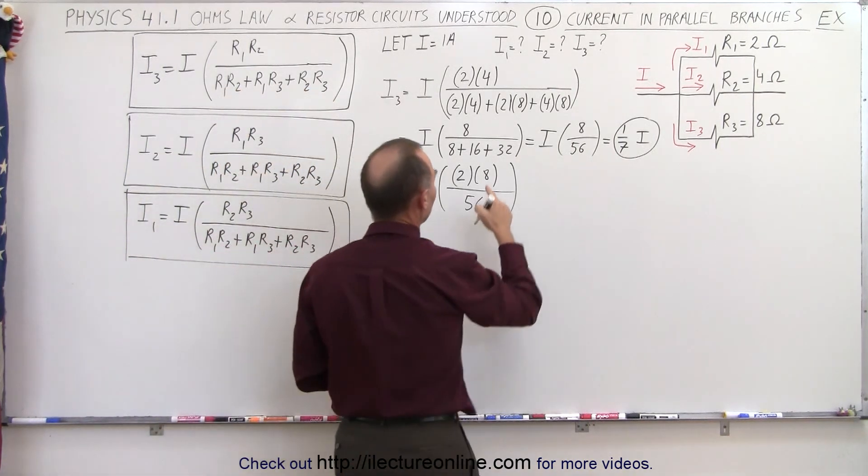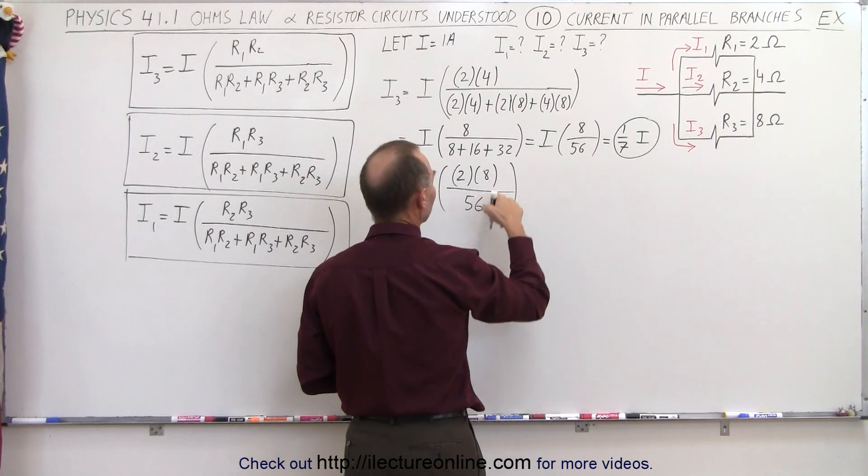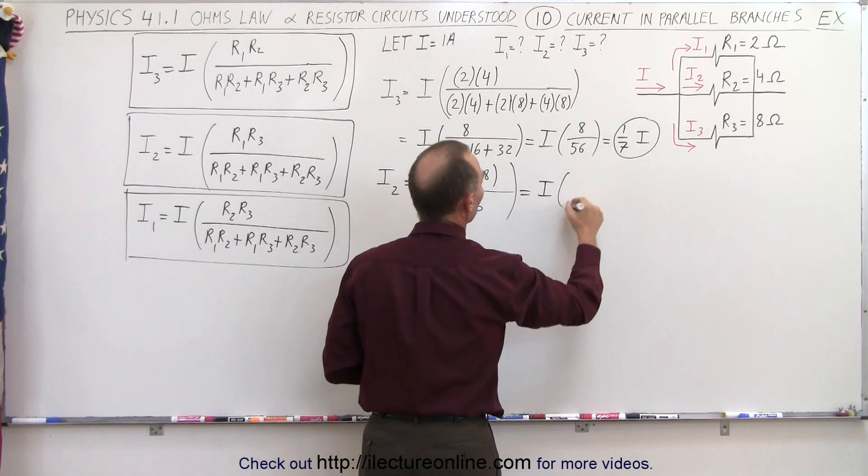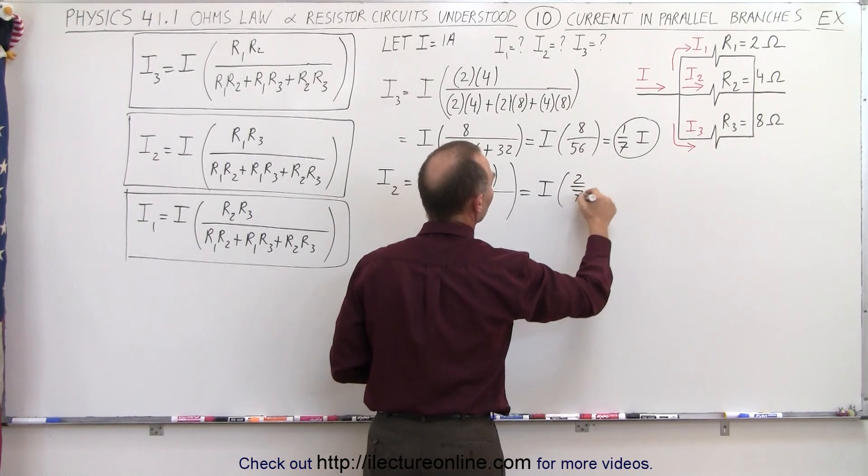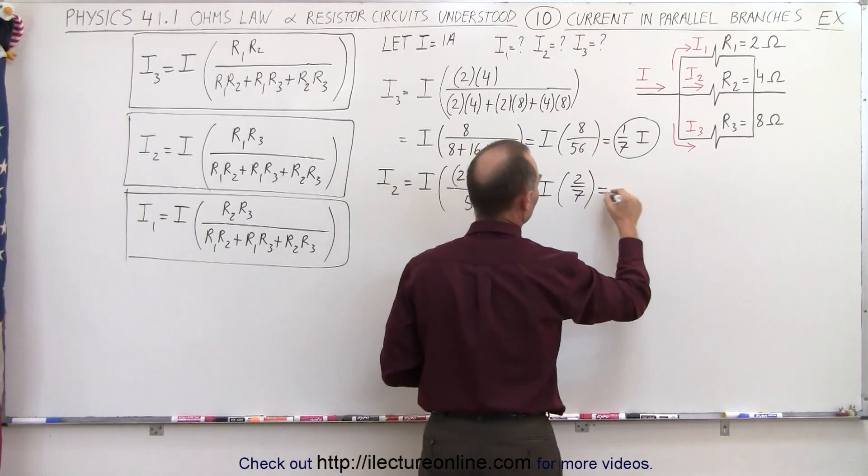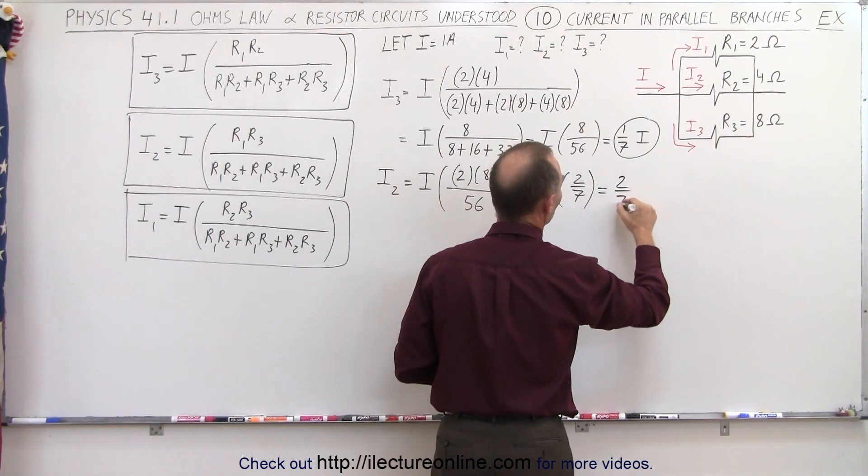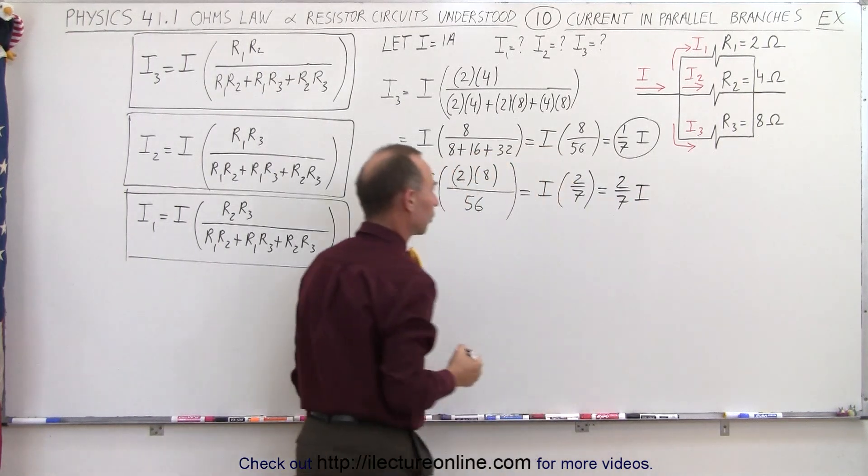So in this case, 8 and 56, that's 1/7th times 2, so this is indeed 2/7ths times I, or 2 over 7 times the total current.